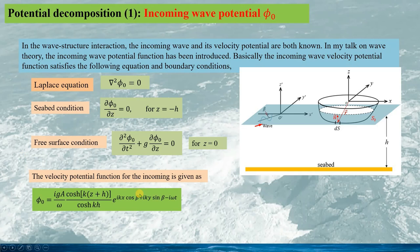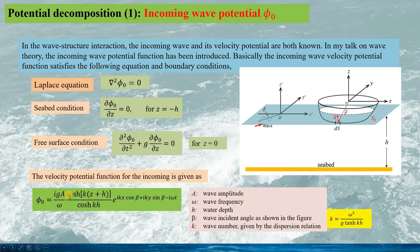The incoming wave potential function is given as shown, where a is the wave amplitude, omega is the wave frequency, h is the water depth, beta is the wave incident angle as shown in the figure, and k is the wave number decided by the dispersion relation given in this equation. The dispersion relation is a nonlinear equation, and it can be solved using an iteration method or using an approximation method.